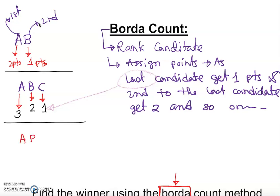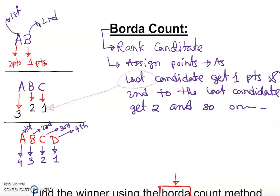If I have four candidates — A, B, C, D — then the points go: first place gets four, second place gets three, third place gets two, and fourth place gets one, and so on. That is how we work it out. We then check how many votes each candidate received, multiply, add it all up, and find the winner.